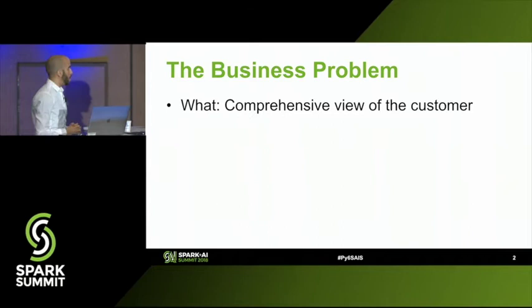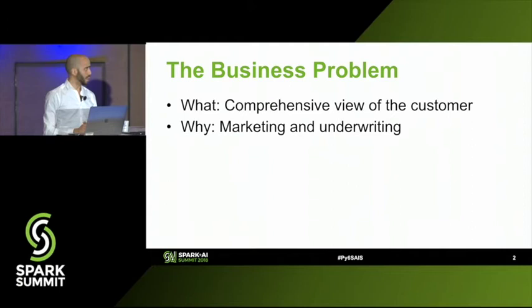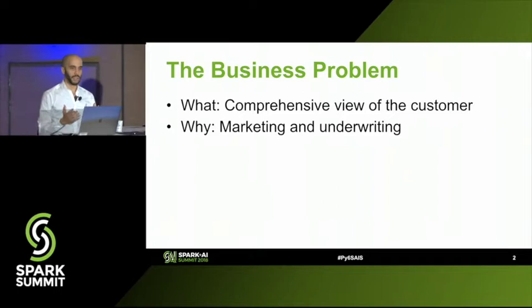So what's the business problem? MassMutual and many other companies want a comprehensive view of their customers, or even potential customers. At least in terms of this project, they were most interested in that for marketing purposes and underwriting. If I have more information about a person, I can market to them more effectively. For underwriting, MassMutual is a life insurance company — if we have a more complete picture of the people we're dealing with, we can underwrite their insurance policy more effectively and more quickly.